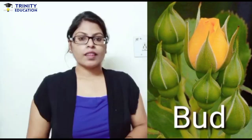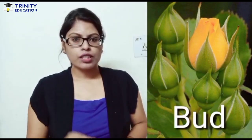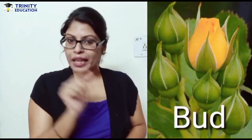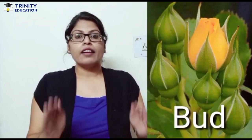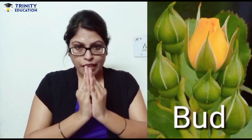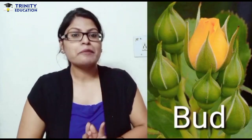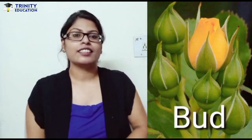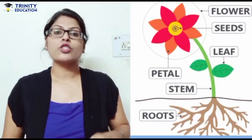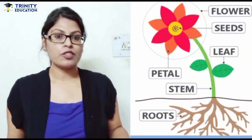The next part of the plant is the bud. It is the smallest part of the plant, inside which there is a baby flower. When this baby flower grows up, it becomes a big flower.